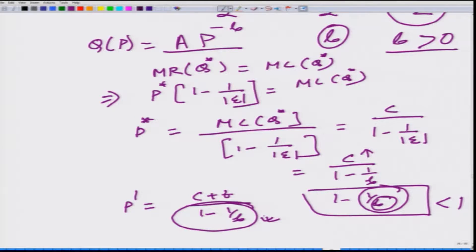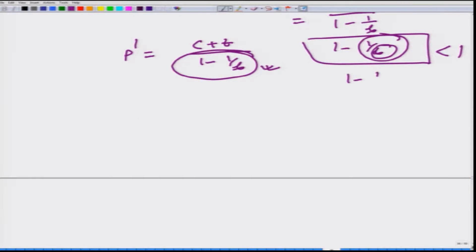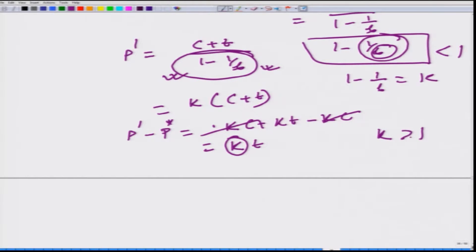So what we are doing basically, if we put 1-1/b equal to k, we have P = k(c+t). How much is the increase in the price that monopoly charges in the market? P' - P* = now, because this denominator would remain same even for the P* case, we have kc. So what do we get? kc + kt - kc, this kc will get cancelled and we get kt. And notice k happens to be greater than 1.